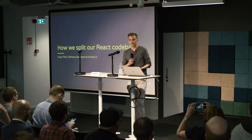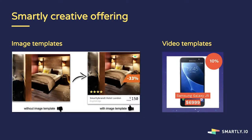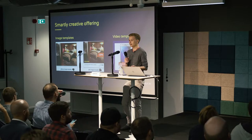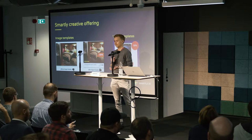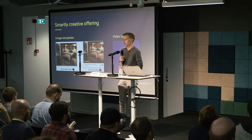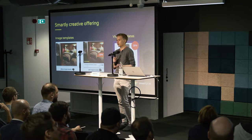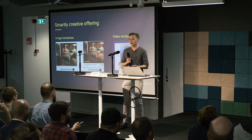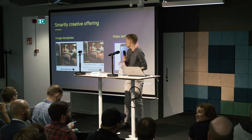Let me first start off with some background on why we would want to do this. At Smartly, one of our main offerings is the image templates tool. This allows you to take any static image and apply some other data like prices and discount percentages on top of it, making it more appealing. This is a really popular tool — we render like millions of images per minute. About a year ago we thought it would also be nice to do this for videos.